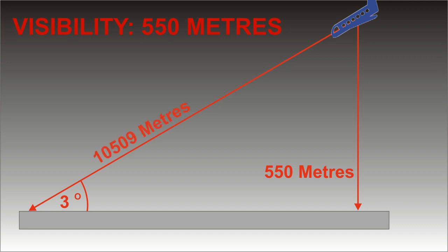However, the distance from the front of the aircraft to the landing point will be 10,509 meters. That is well over 550 meters, so the pilot will not see the runway.